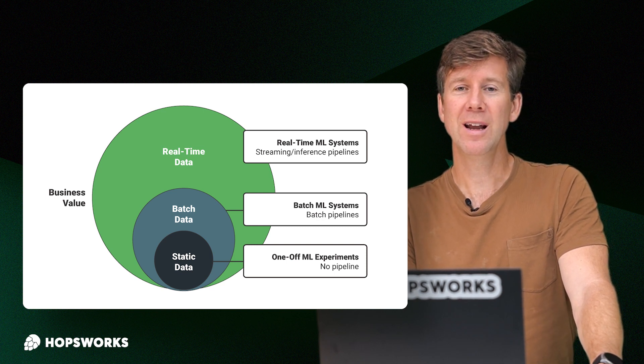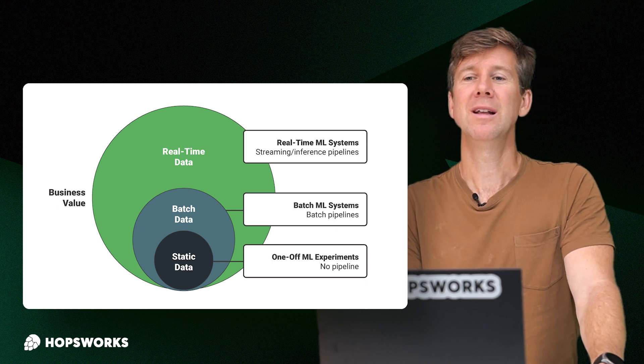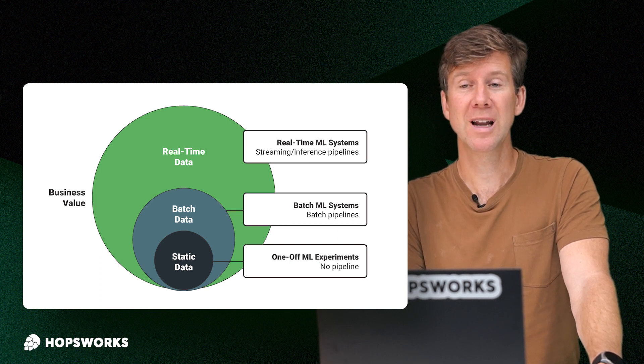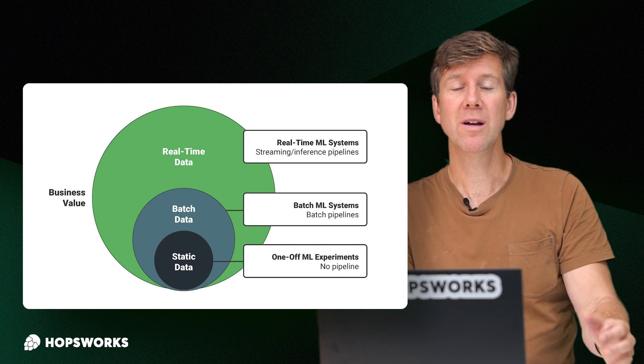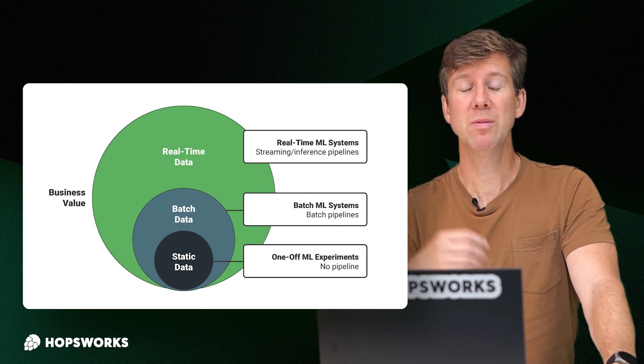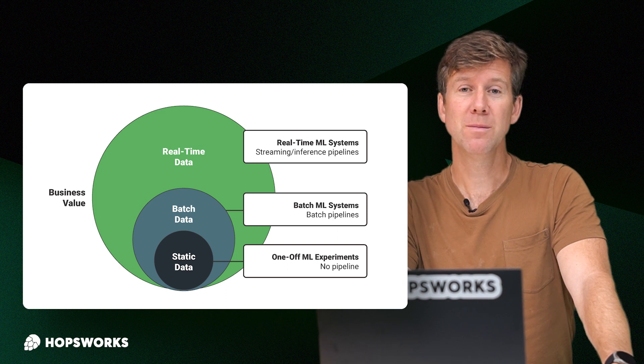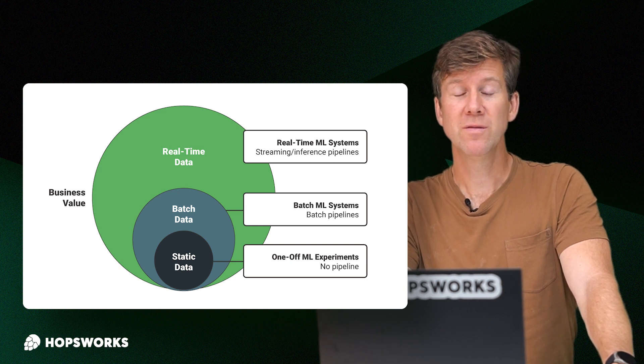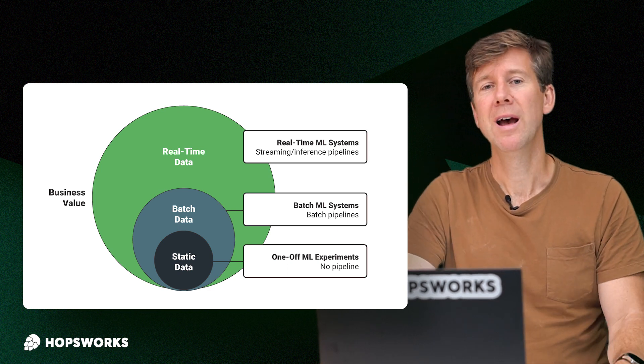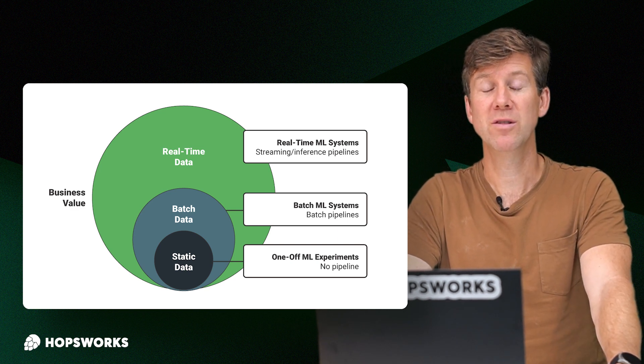You can say that a machine learning model that's trained on static data is not a machine learning system. It's a one-off ML experiment. You can generate one-off predictions with that model you've trained on your static data. To build a machine learning system you need to have new data coming in that you can make predictions on. The model will generate more value when it keeps making predictions on more and more data. So that means that you could have a batch machine learning system. It would take in batches of data. It'll run on a schedule maybe once a day, maybe once a week or once an hour.